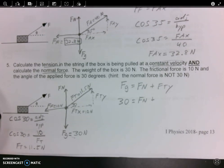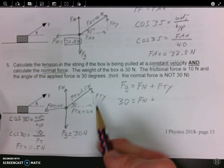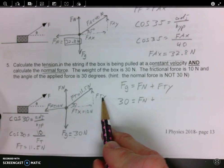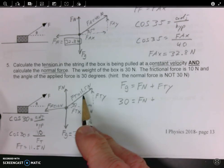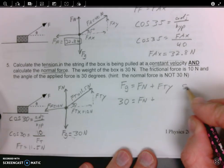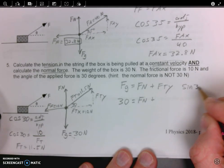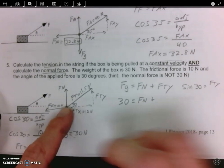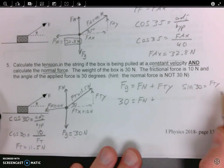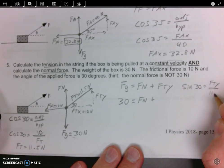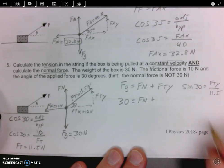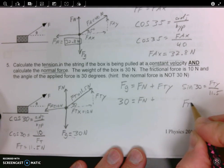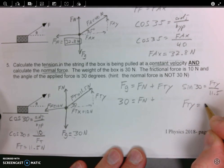So the trig function that will help us find Fty if we know that the hypotenuse is 11.5 is sine. So we can do sine 30 equals opposite, which is Fty, opposite 30, over hypotenuse, which is 11.5. So Fty equals 5.8 newtons.